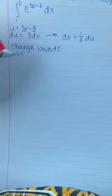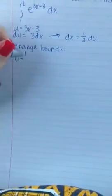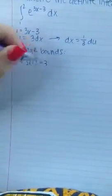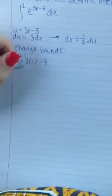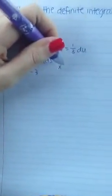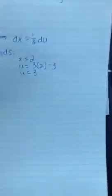When x equals 1, we're going to solve and see what u is. Our new u is 0, and then when x equals 2, substituting 2 for the value of x, u equals 3. So our new bounds are from 0 to 3.